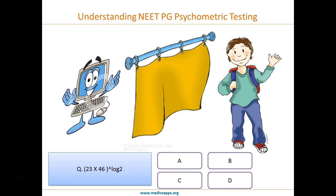But the student answers in 10 seconds and is right. What does this mean? Does this mean the student is a genius? Probably not. The computer understands that if the average time taken to solve a question is 2 minutes, no student should be able to answer it in less than 1 minute 30 seconds or 1 minute 10 seconds.